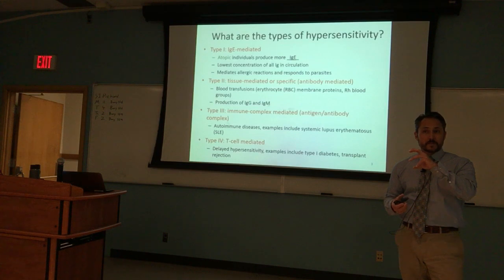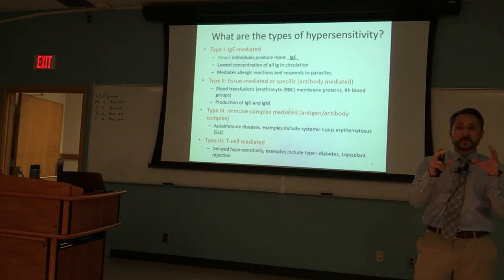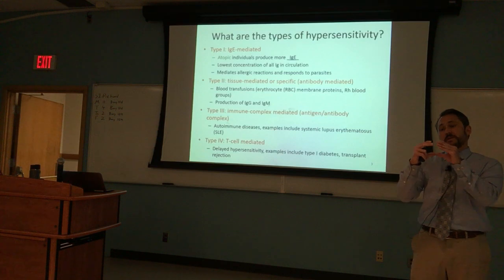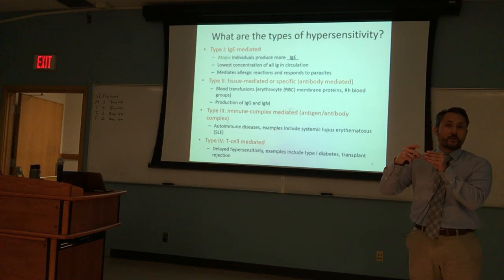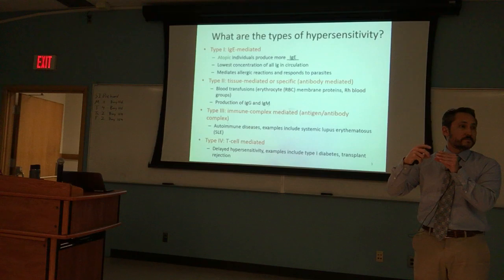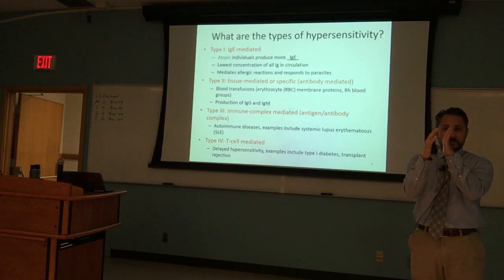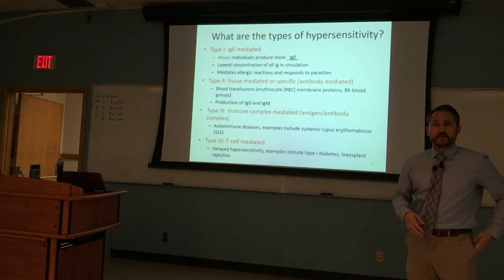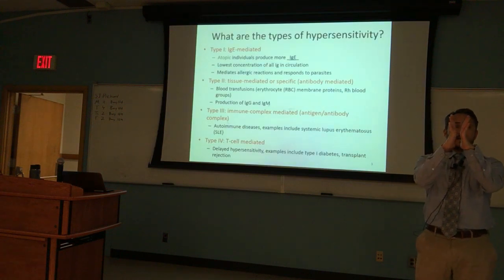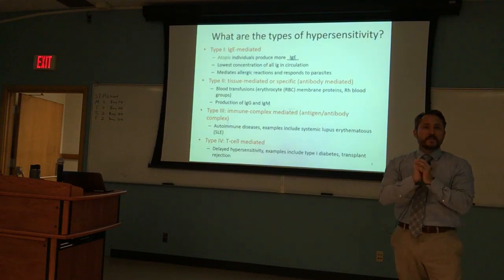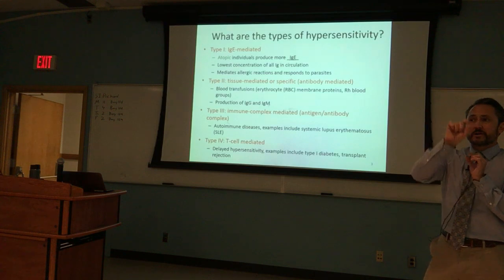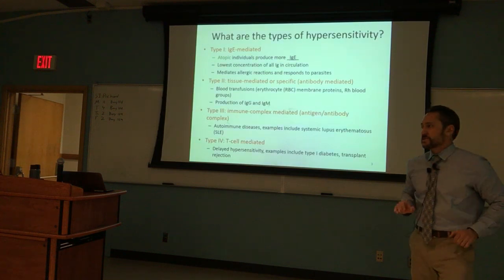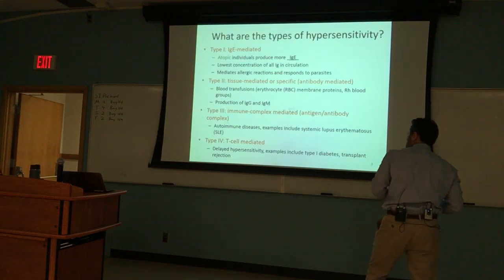Red blood cells are anuclear — during development they spit out their nucleus, and now the red blood cell has this concave shape, kind of like a not-fully-formed donut with two little pinches on either side. There are surface antigens that show up on these red blood cells.